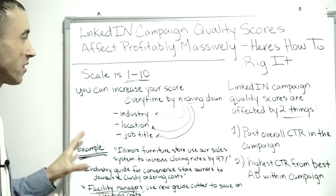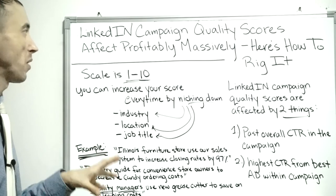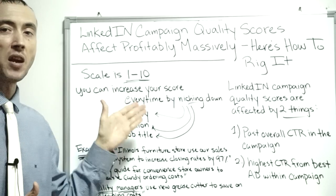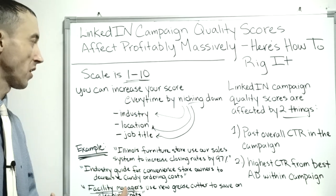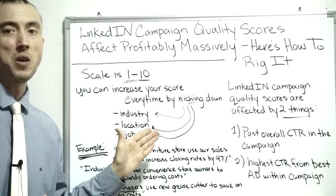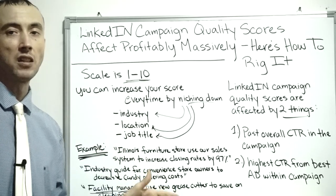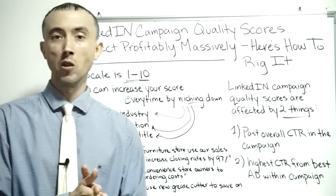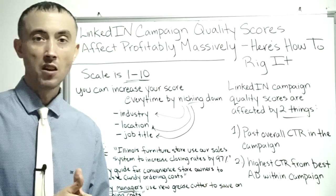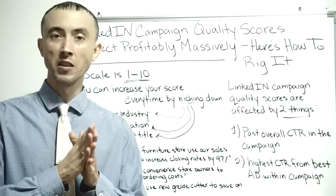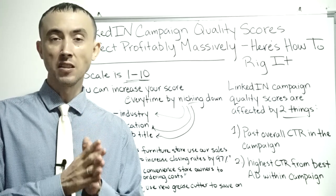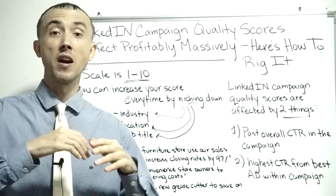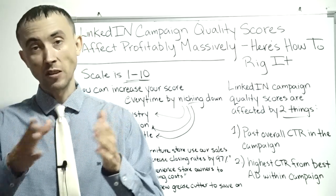That is how you get LinkedIn campaign quality scores to go up every time. You've got to put in the work, break down your campaigns into smaller sections so you know who you're speaking to, so you can speak to them directly. It's really that simple. And if you do that, you can get cost per click as low as 50 cents on LinkedIn with super high quality clicks, high conversion rates, and high selling rates — if you know how to set up the rest of the funnel and do the follow-up right.